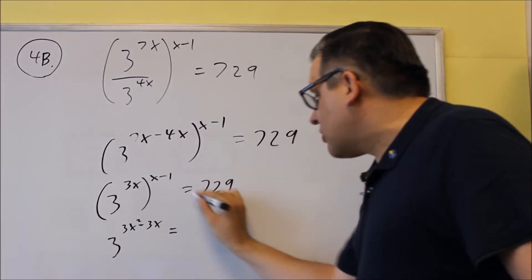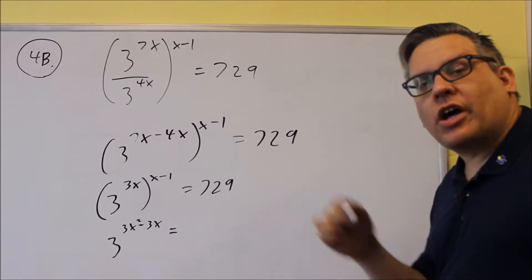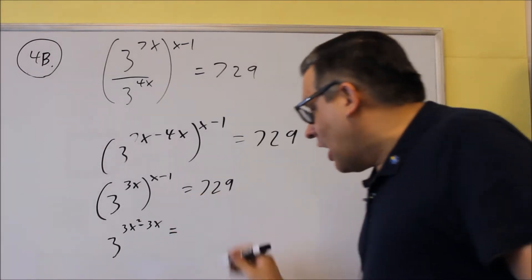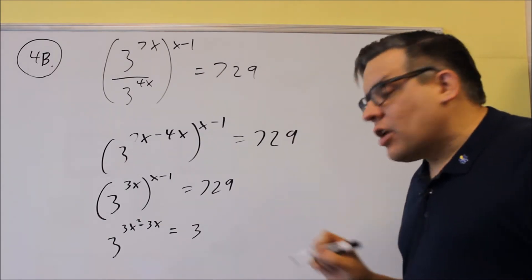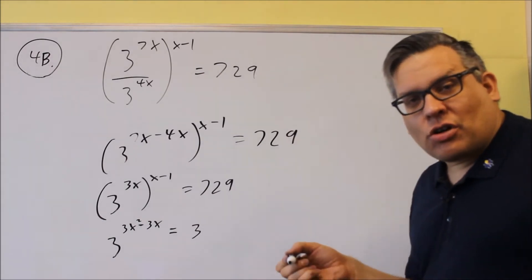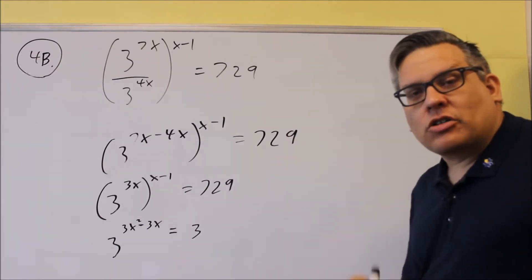Now in order to use equal basis property, we have to get 729 as a base, and it's going to have to be a base of 3. We just have to figure out what the exponent is. If you're not sure, you can actually just use your calculator and start multiplying.